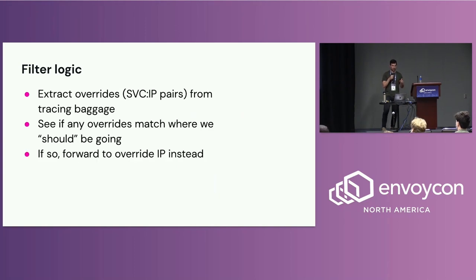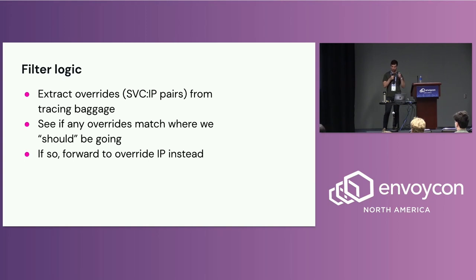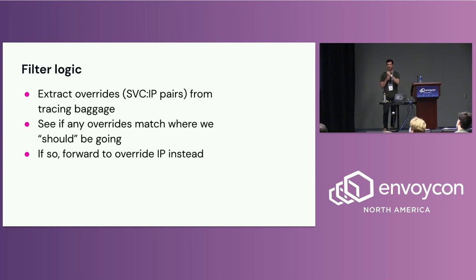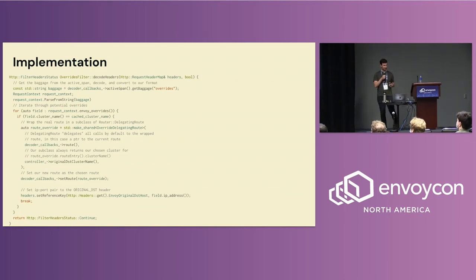At a high level, the filter logic works as follows: we extract the override information from the baggage — generally service-to-IP pairs. We check if any overrides match where Envoy is about to route. By the time the HTTP filter runs, Envoy has already chosen its destination based on host header, paths, etc. If there's a match between what's in the overrides and where Envoy plans to go, we intercept that routing and send to the override IP address instead. If something was broken in development but working elsewhere, this would cause unclear ownership issues — the filter handles that by redirecting appropriately.